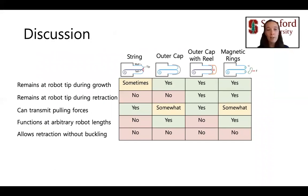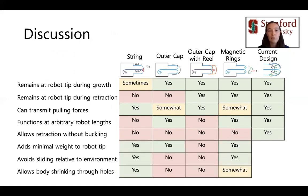In summary, unlike the four previous tip mount designs, our current tip mount design remains at the robot tip during growth as well as retraction. Our design transmits pulling forces to the environment, functions at arbitrary robot body lengths, and allows retraction without buckling. However, our design has three main limitations that are not shared by all previous tip mount designs. First, it adds significant weight to the robot tip, decreasing its maneuverability and undercutting the natural ability of the robot to support its own body weight over obstacles and across gaps.